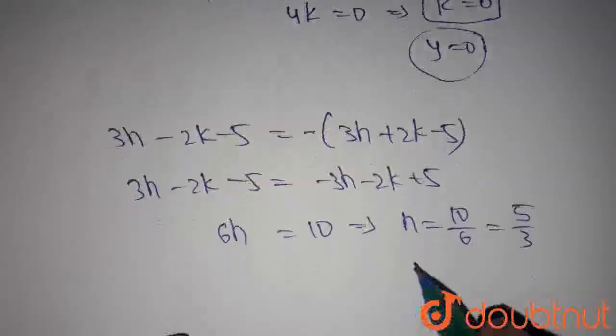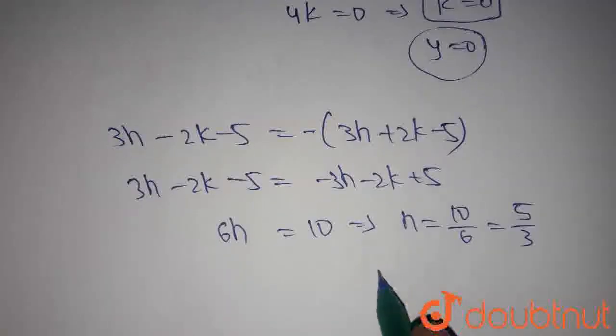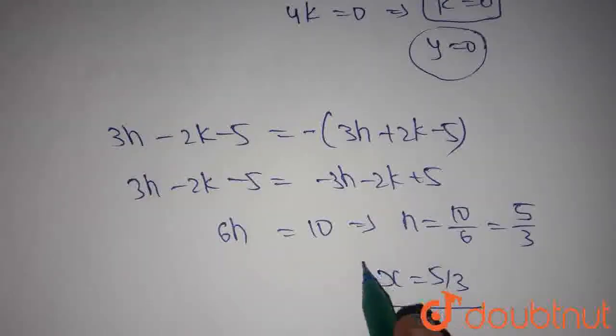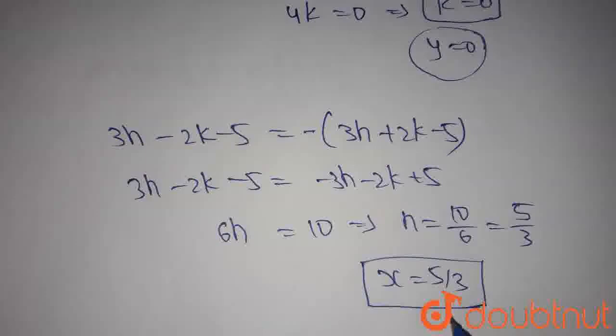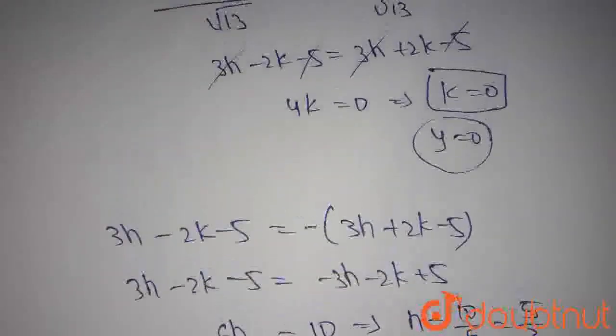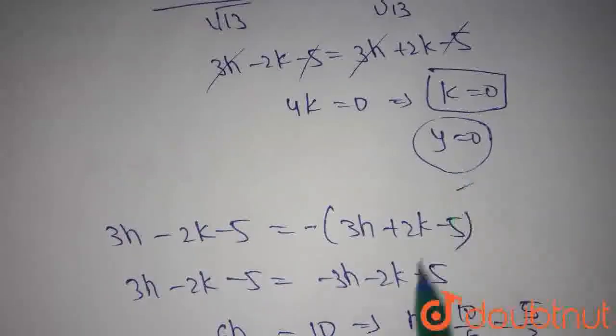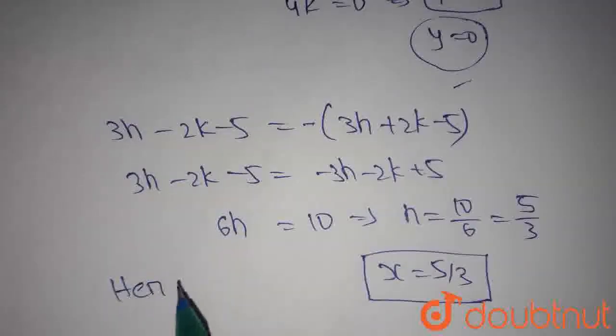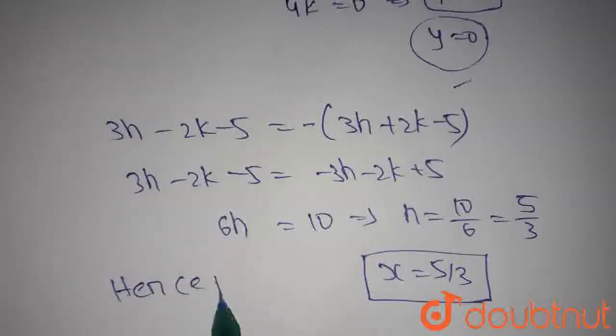Since h is the x-coordinate of point P, we get x=5/3. x=5/3 represents a straight line, and y=0 also represents a straight line. Hence, we have proved that the locus of the point moving equal distance to the given two lines is a straight line.